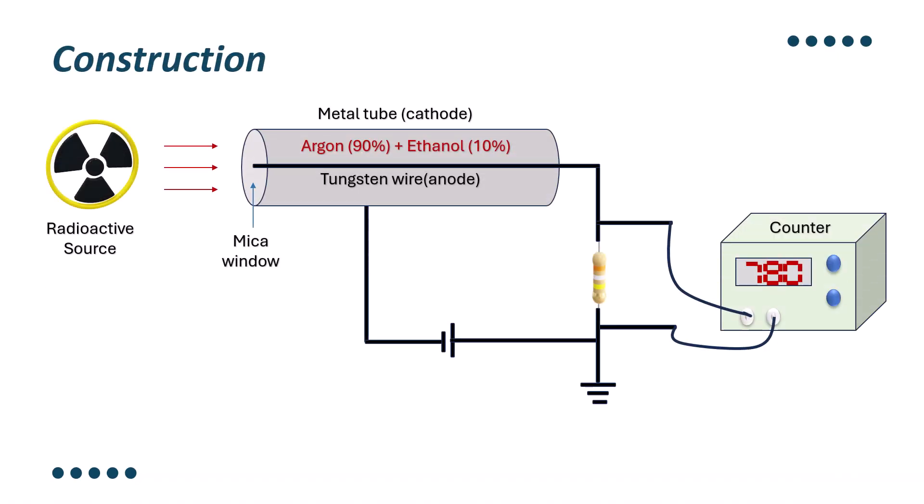Let's see the construction of GM counter. It is made up of thin metal tube inside a hollow metal housing. This thin metal box served as a cathode. As you may see in this diagram, metal tube is served as a cathode.